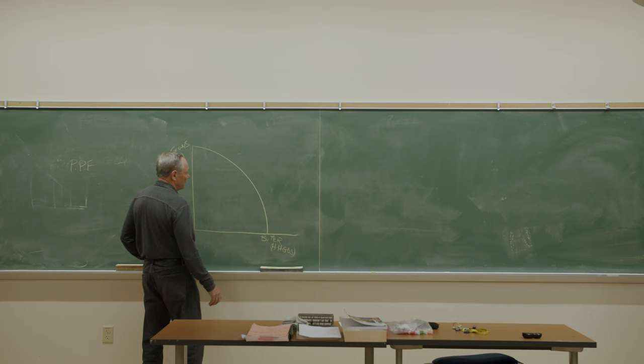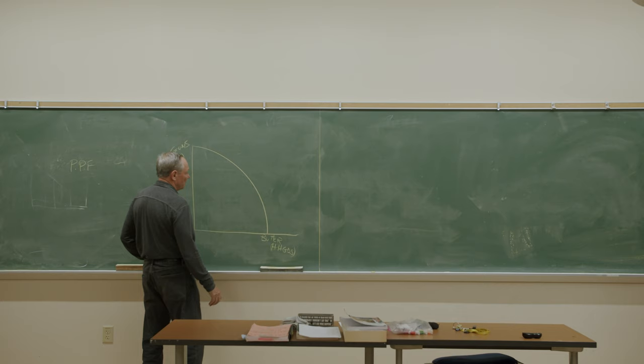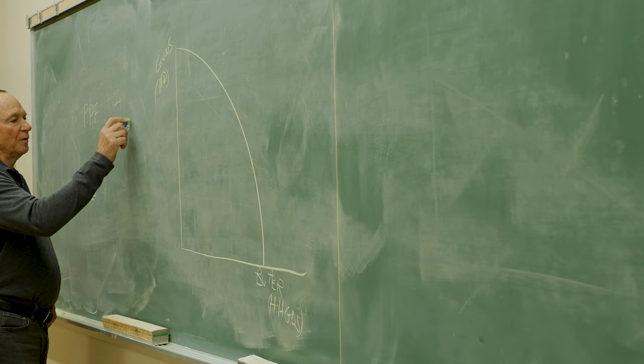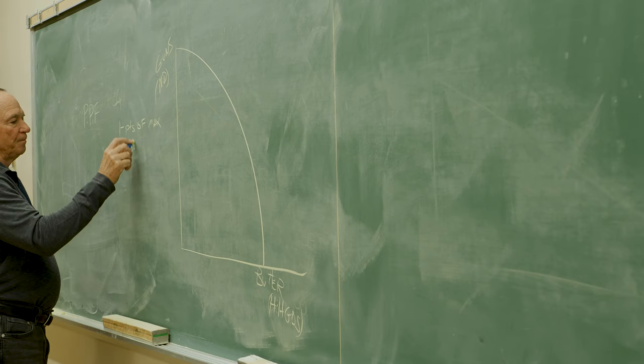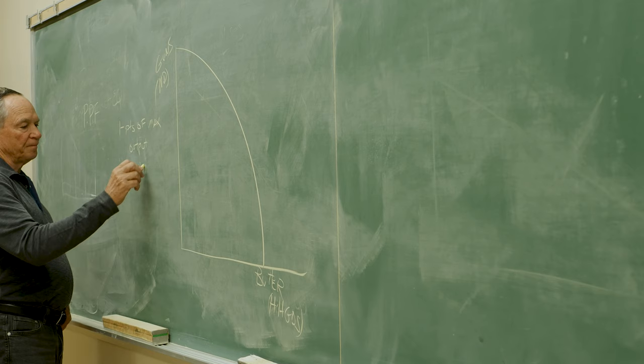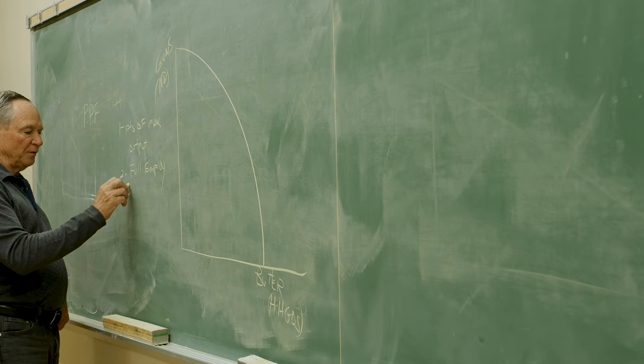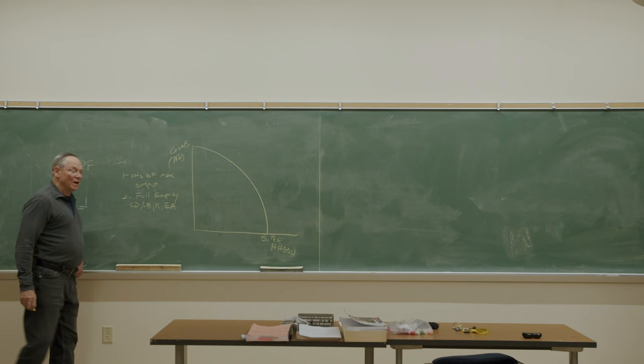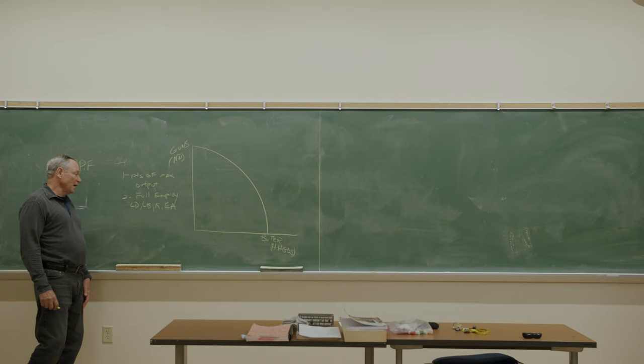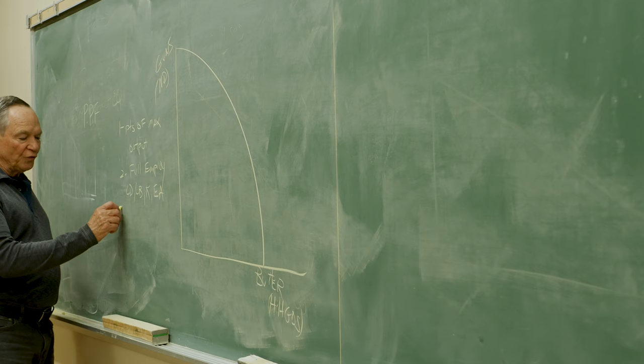When you draw this curve this way, these are considered to be points on the curve, points of maximum output. We're going to assume, because that's how we draw it, that we assume full employment. Full employment of all our resources: land, labor, capital, and entrepreneurial ability, which we abbreviate in the way that I've just shown you. We don't use a C here, we use a K.